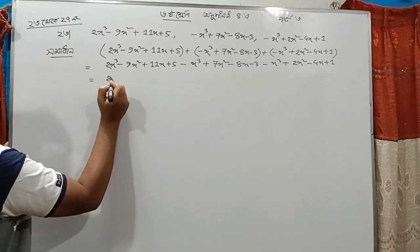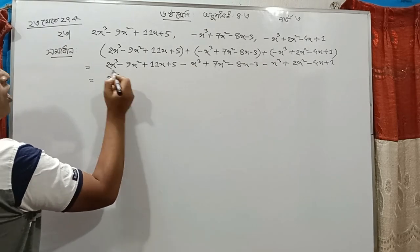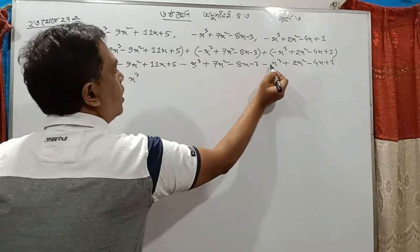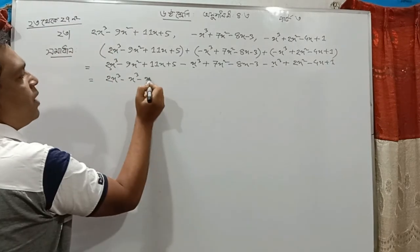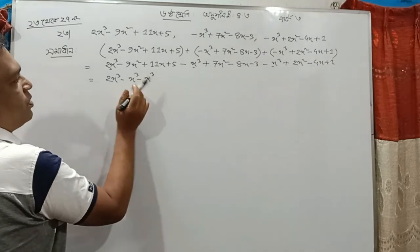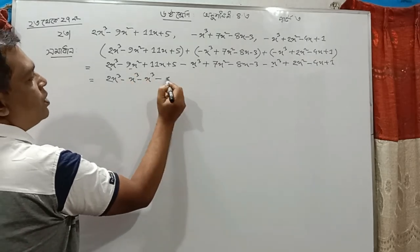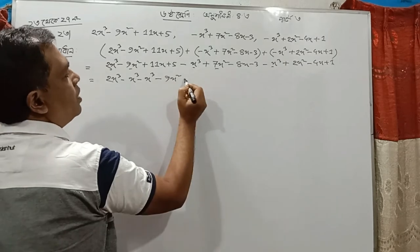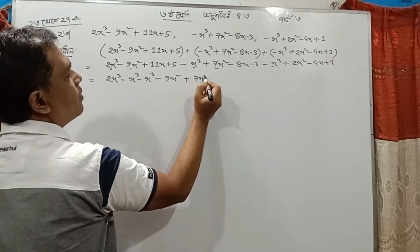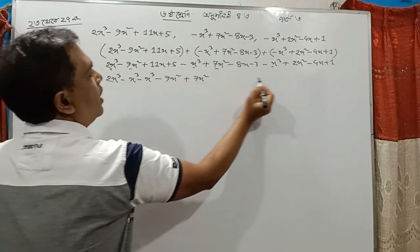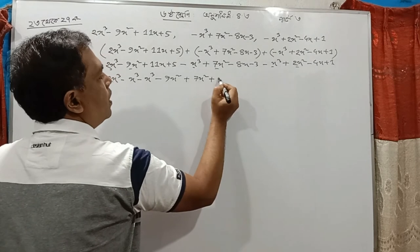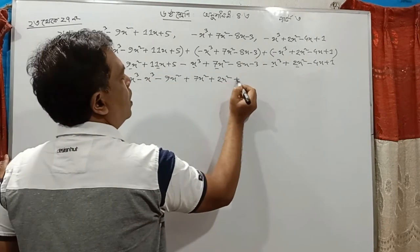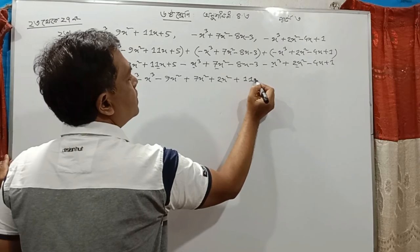We have 5. This is x cube. We have a bracket. This is 5. Now x square is 5. This is 9x square. 312 plus 7x square. This will include 2x square. This is x square.